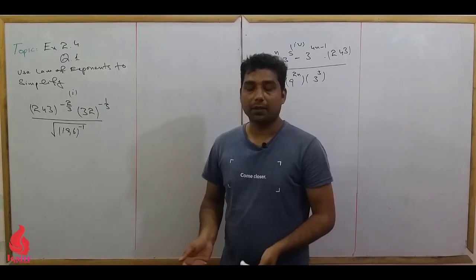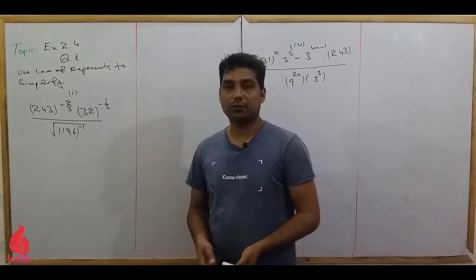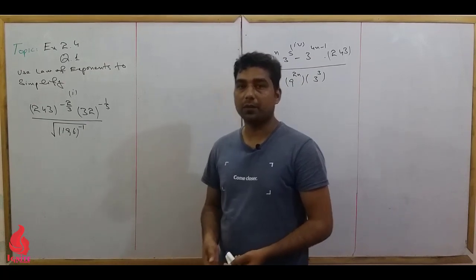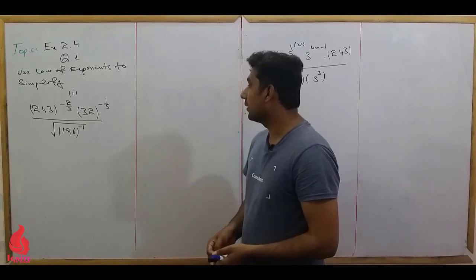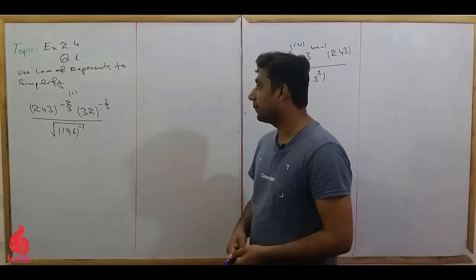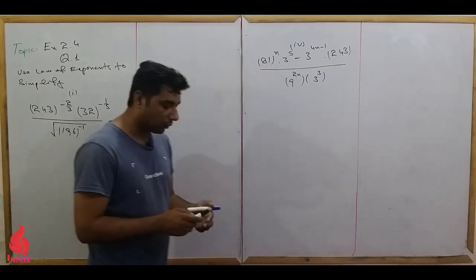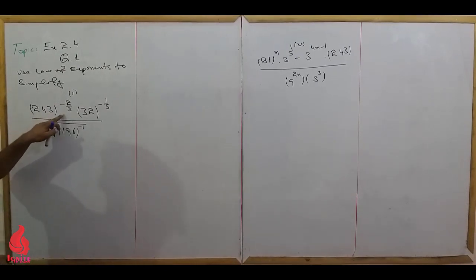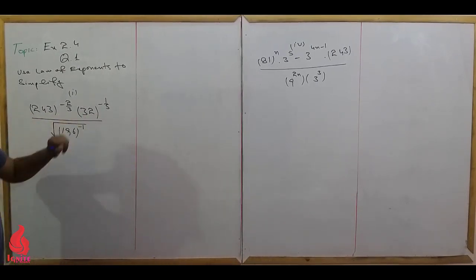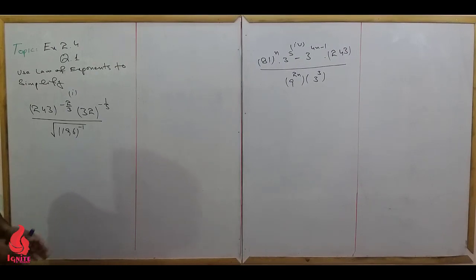Assalamu alaikum dear students. Last lecture we covered the law of exponents. Today we have Exercise 2.4, Question number 1, first part and fourth part. We will solve using the law of exponents. We have: 243 whole raise to power minus 2 over 3, 32 whole raise to power minus 1 over 5, 196 whole raise to power minus 1, and a square root.